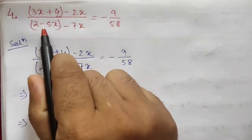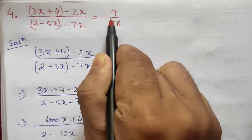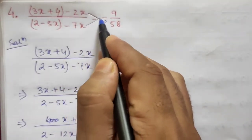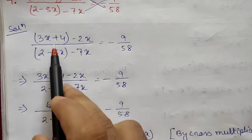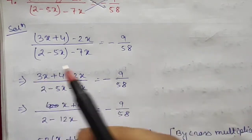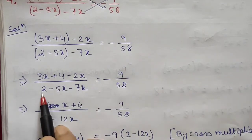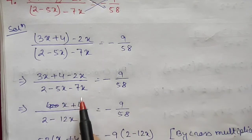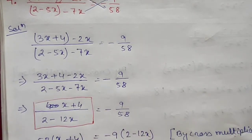Question 4: (3x + 4 - 2x) / (2 - 5x - 7x) = -9/58. First simplify: numerator 3x - 2x = x, so x + 4. Denominator: -5x - 7x = -12x, so 2 - 12x. Now we cross multiply: (x + 4) × 58 = (2 - 12x) × (-9).